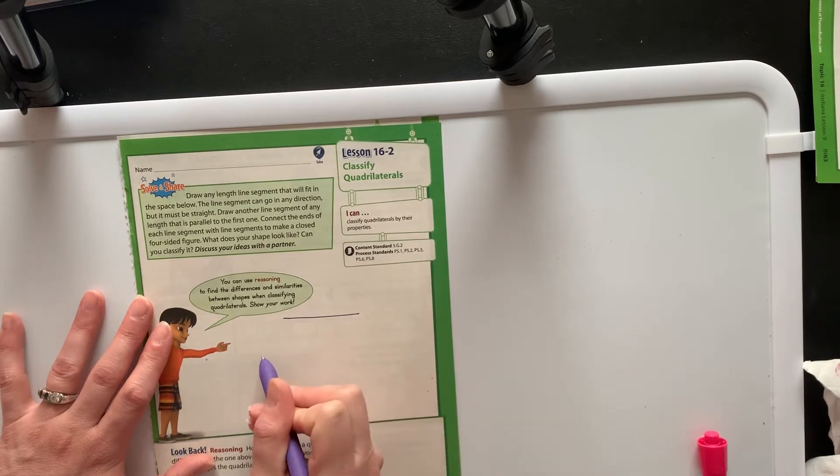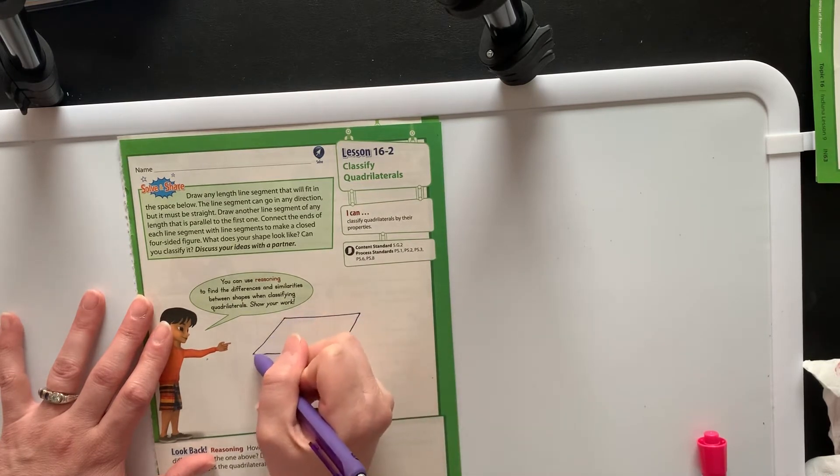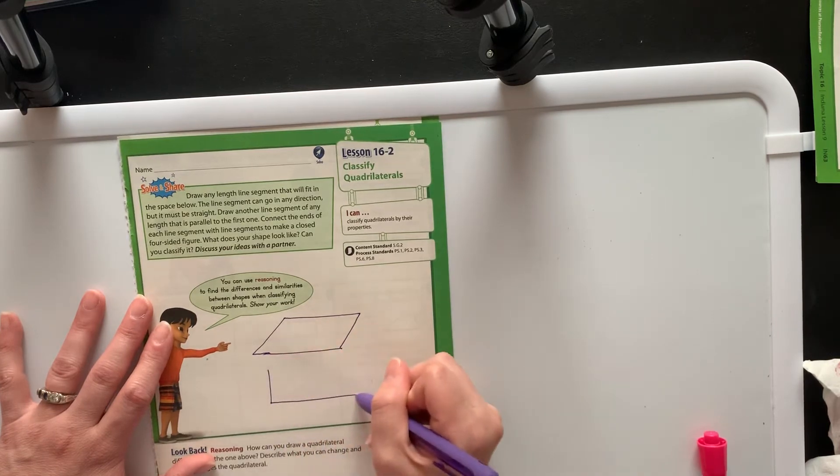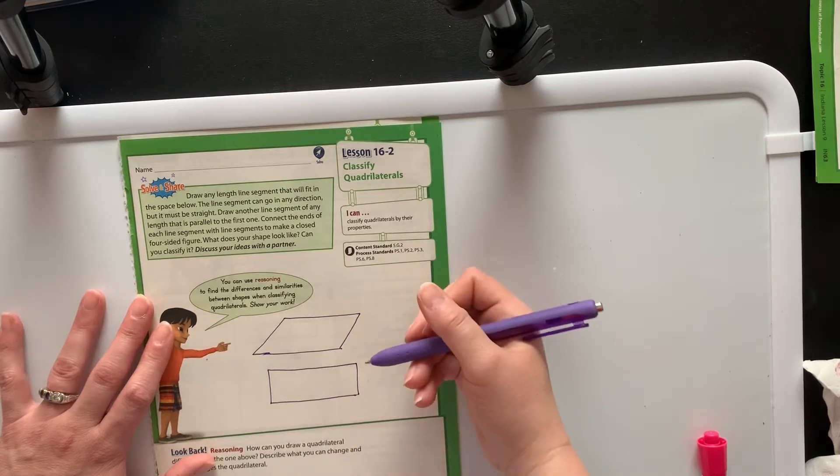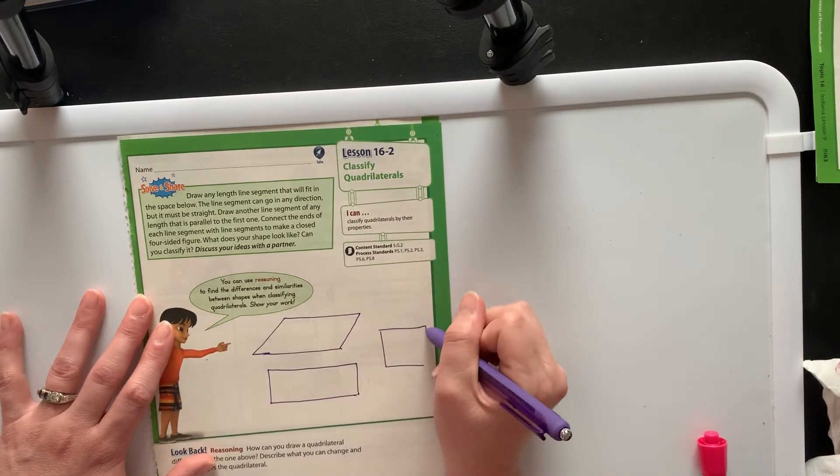Here's basically what we would have done if we would have followed these directions in class. Some of you would have made something that looks like this - this is called a parallelogram. Some of you would have probably made something that looks like this - this is a rectangle. And then some of you of course would have probably made a square. They all follow those same directions.